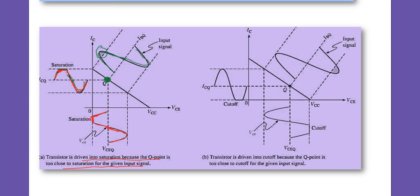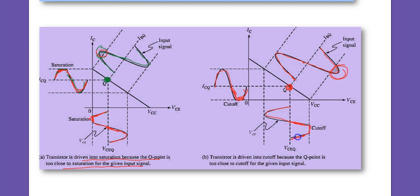Conversely, if the Q-point is too close to cutoff, the output is fine for part of the signal, but another part is cut because it goes into the cutoff region. Some part of the signal is clipped, and similarly a portion of the collector-emitter voltage is also cut off.